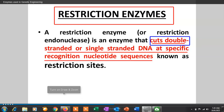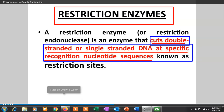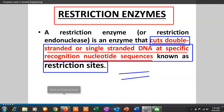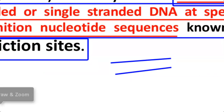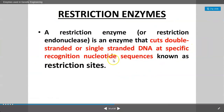These enzymes cut down the double-stranded or single-stranded DNA molecule at a specific recognition sequence, or nucleotide sequence. That specific recognition nucleotide sequence is called as the Restriction Site, also known as the Recognition Site. For example, suppose this is a double-stranded DNA molecule having a sequence of adenine, adenine, guanine — and the enzyme cuts that DNA at a particular site. That site is called as the Restriction Site or Recognition Site.